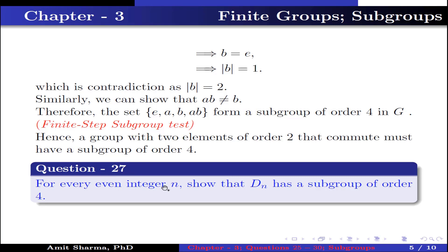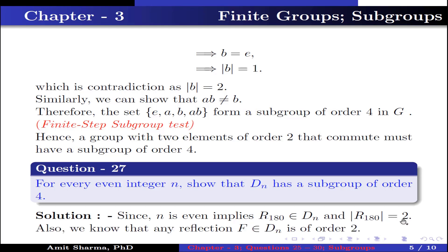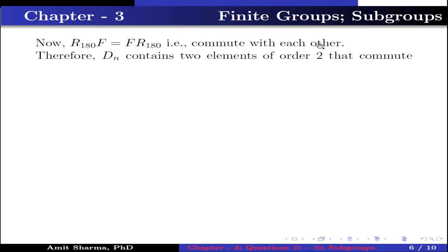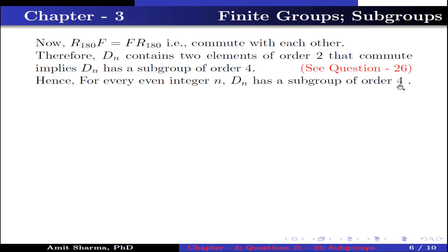Question number 27: for every even integer n, show that Dₙ has a subgroup of order 4. Since n is even, r₁₈₀ belongs to Dₙ and the order of r₁₈₀ is 2. Also any reflection f in Dₙ has order 2 since reflections are self-invertible. Now r₁₈₀ and f commute, so Dₙ contains two elements of order 2 that commute, which implies Dₙ has a subgroup of order 4 (see Question 26). Hence for every even integer n, Dₙ has a subgroup of order 4.